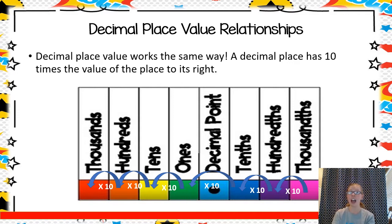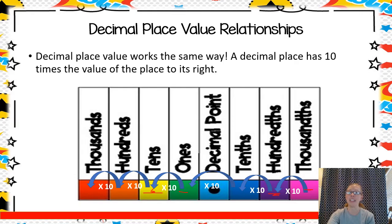So the hundredths place, here on the decimal side of things, is 10 times the value of a number in the thousandths place — just like the tens would be 10 times the value of something in the ones place.